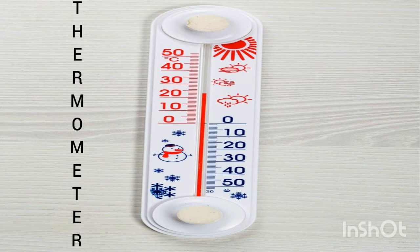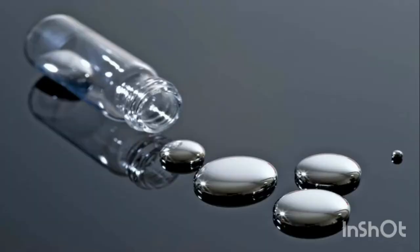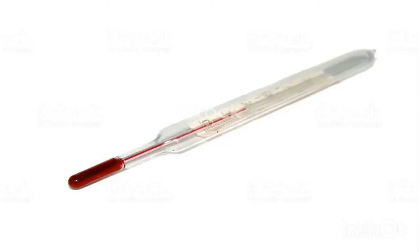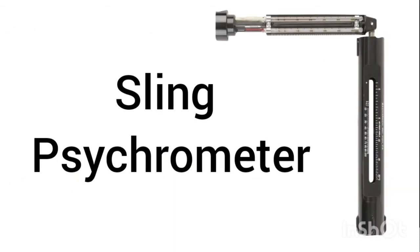It has a liquid inside which used to be mercury but now is alcohol. It measures air temperature in degrees Celsius, Fahrenheit, or Kelvin. Scientists use this weather instrument for locating the temperature and adding the results to the weather map.